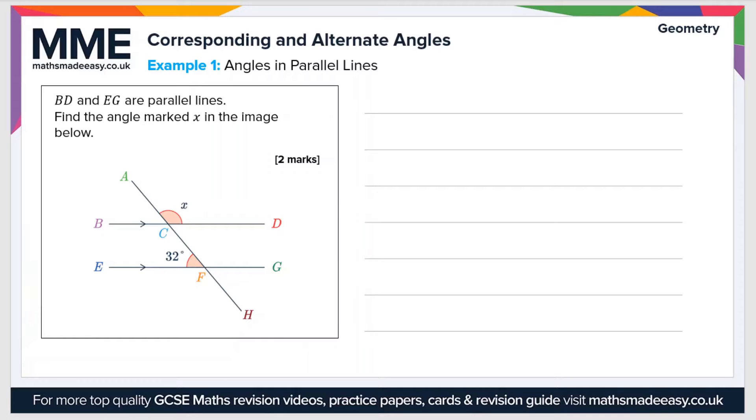Let's take a look at an example now. BD and EG are parallel lines, so that's these two lines here. Find the angle marked X in the image below.